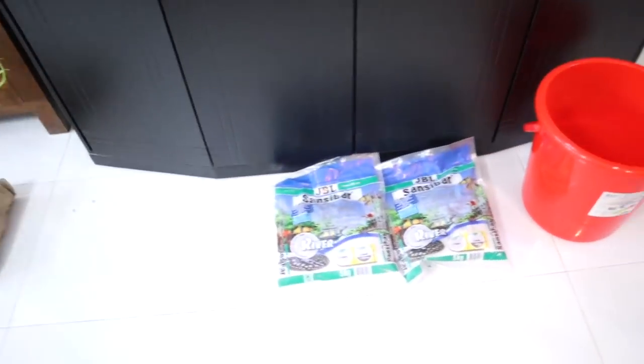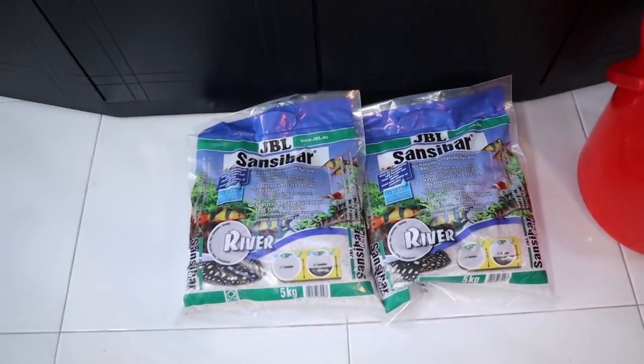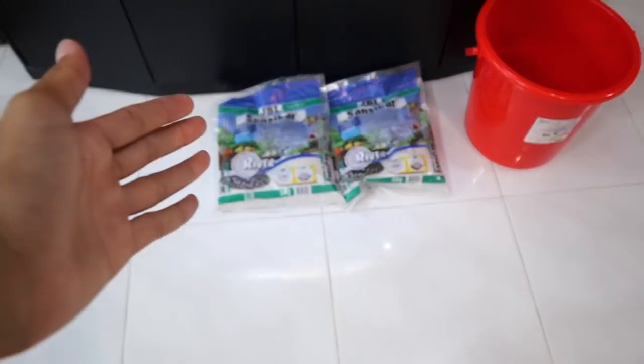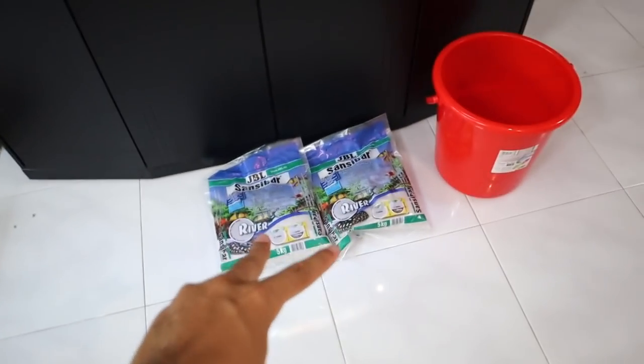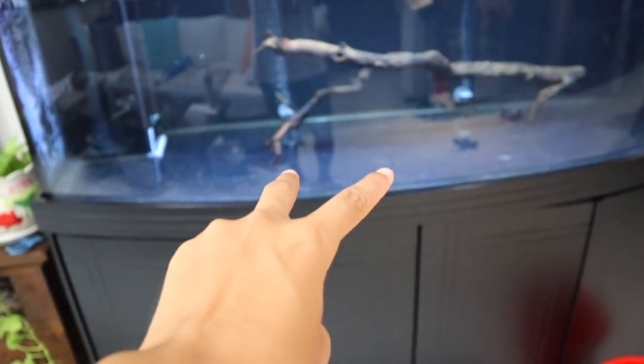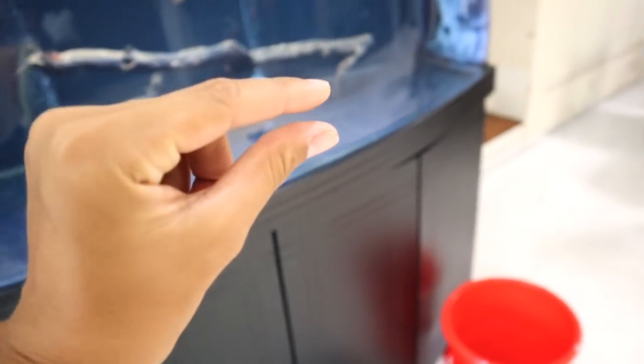So I'm back from the fish store. I was gonna record the part where I got the sand but I forgot to bring along my camera. Here is the sand that I got. This right here is the JBL Sanzibar River Sand. One bag is five kilograms and I'm gonna be adding two of these bags into this tank. I just want a very thin layer.